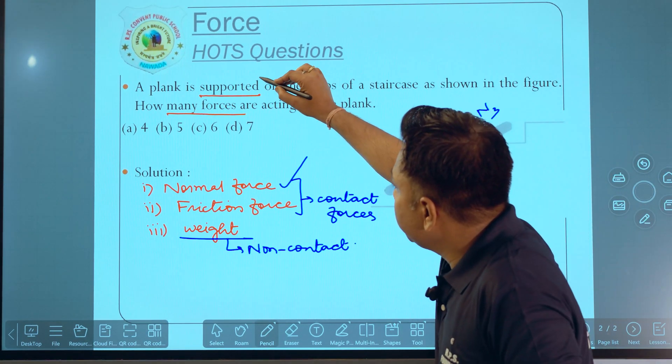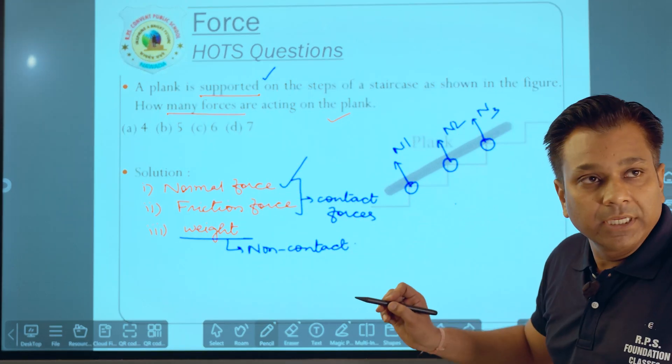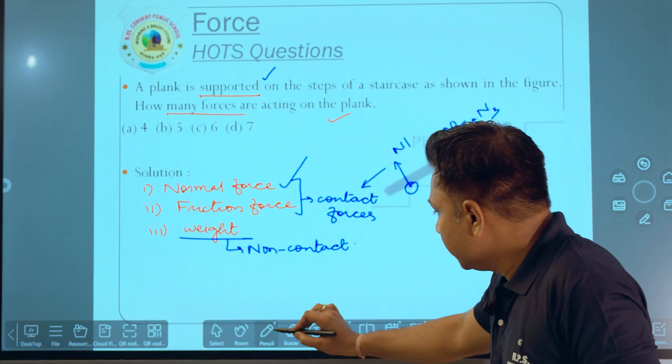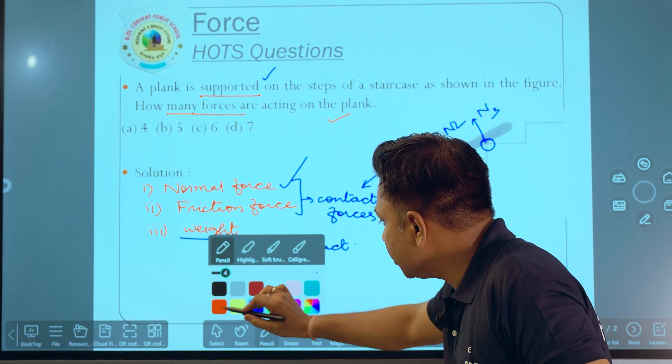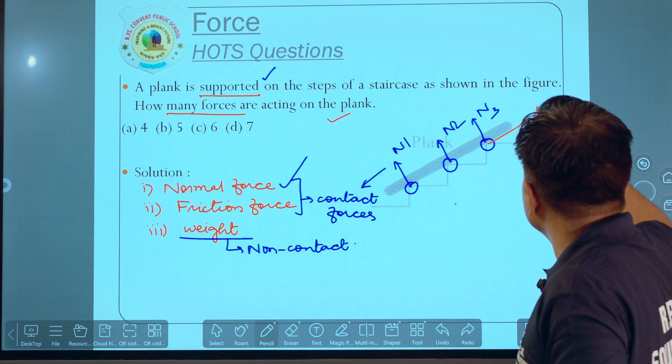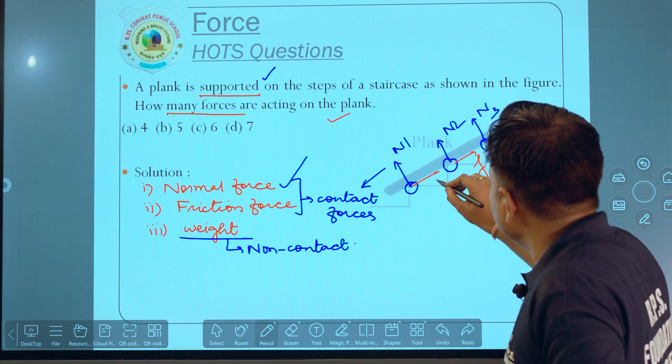So it is given that the plank is supported, which means that plank is not moving. But the tending motion of the plank is in which direction? In the downward direction. So the friction force will act in this direction. So it is your friction force: we can take 1, friction force we can take 2 and 3 forces.